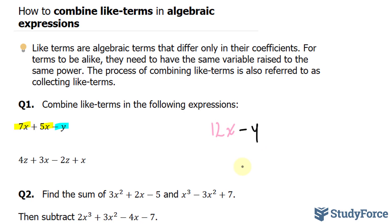In our next expression we have 4z plus 3x minus 2z plus x. Let's go ahead and highlight the like terms. The 4z and minus 2z are alike. Notice that I'm highlighting the minus as well. That belongs to the 2z. We also have 3x and positive x that are alike.